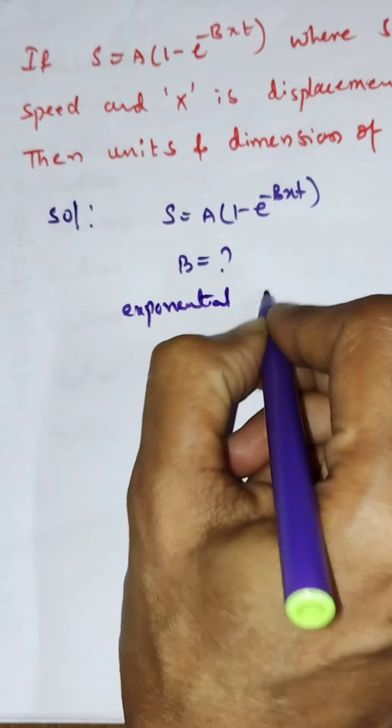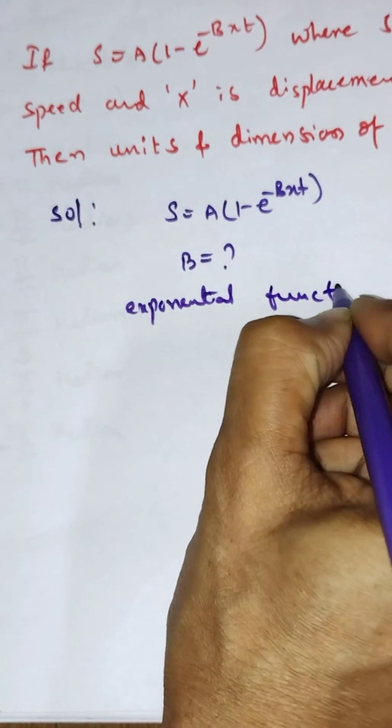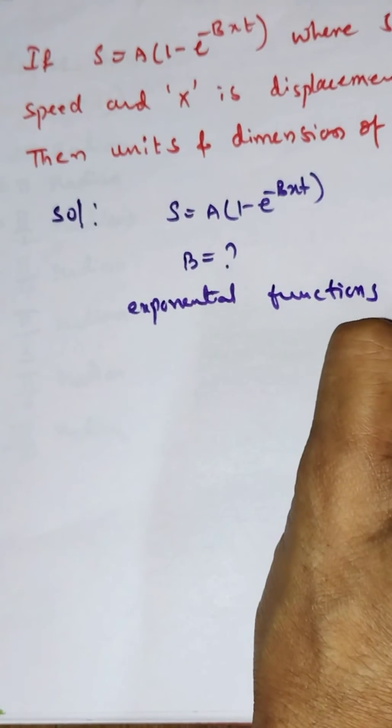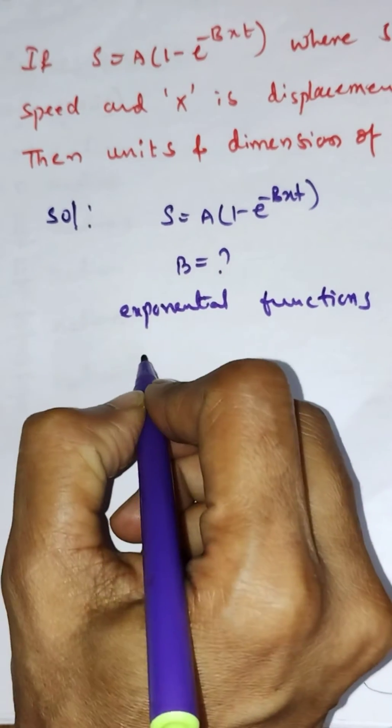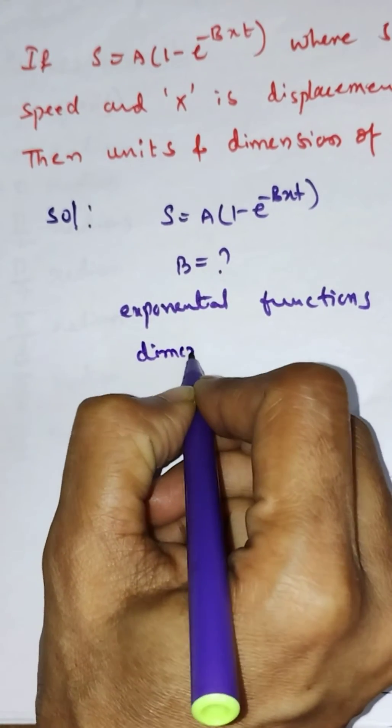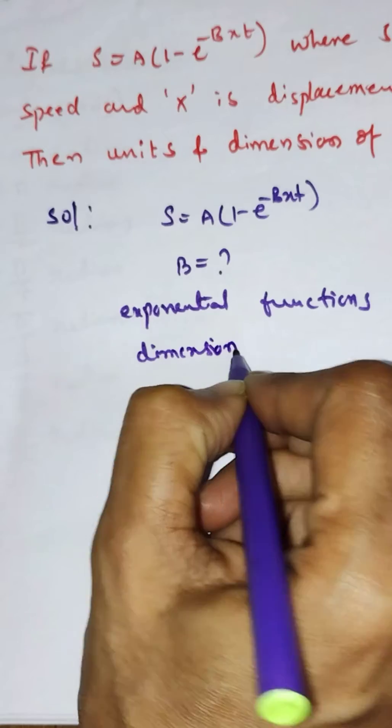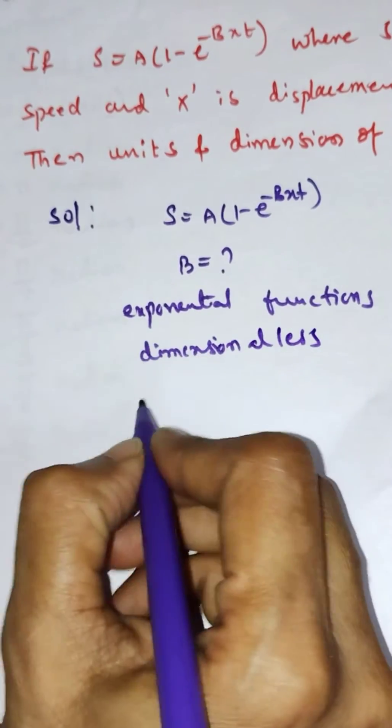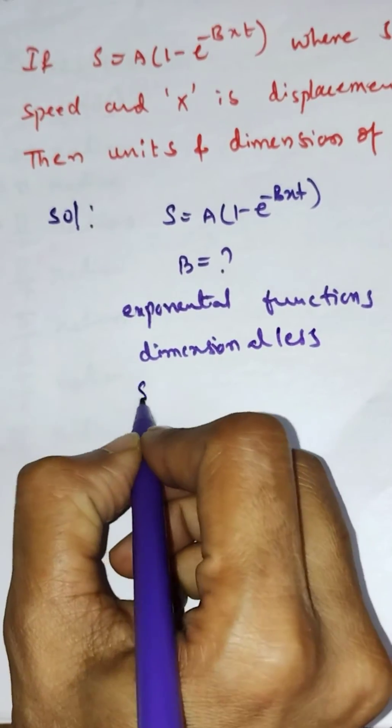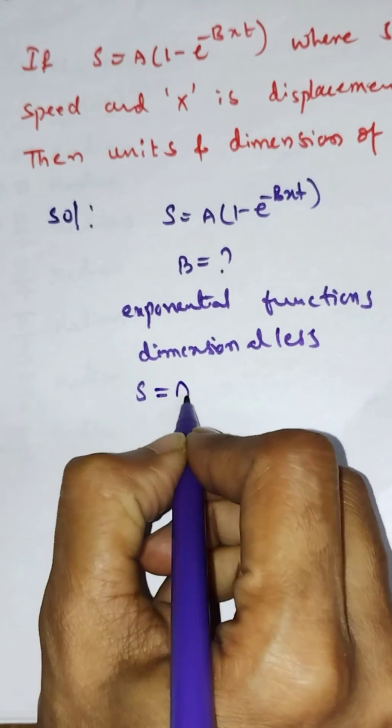All exponential functions do not have any dimensions, meaning exponential functions are dimensionless. So from that condition, we can write that Bxt equals dimensionless, since e^(-Bxt) is there.